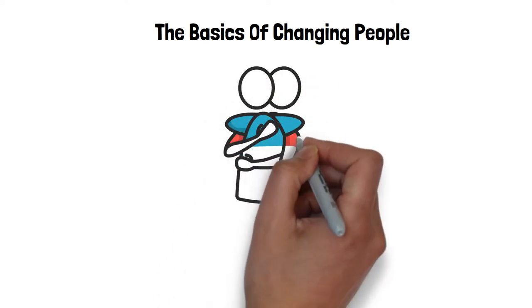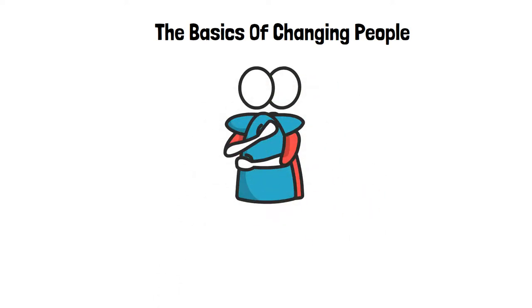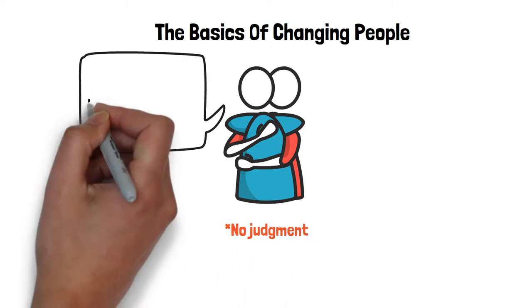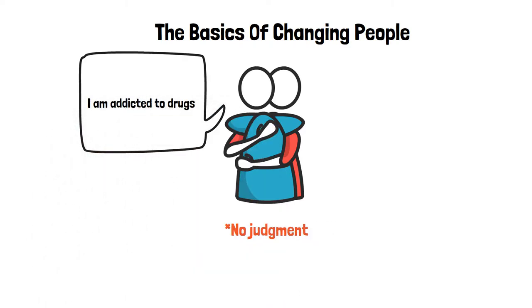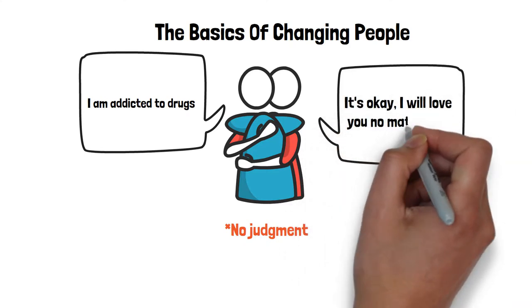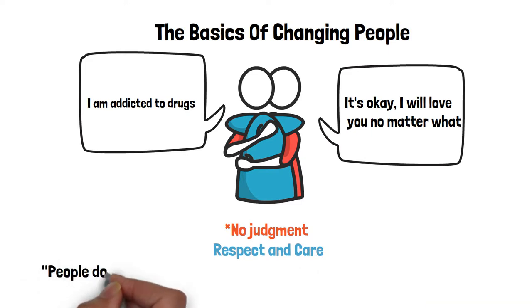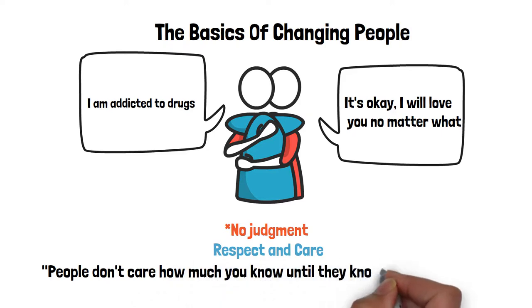The basics of changing people. Tony Robbins says that to change someone, you need a solid relationship first, which is based out of two things. Number one, no judgment. Never judge the person you want to help. Be open to whatever they have to say without putting any label on it. Number two, respect and care. Look for something you can respect about someone and care about them. Theodore Roosevelt said, people don't care how much you know until they know how much you care.